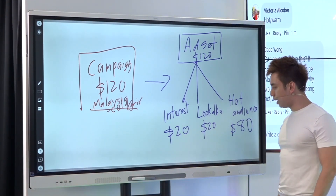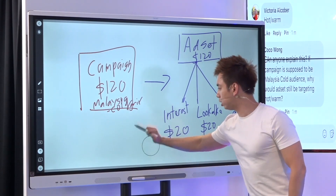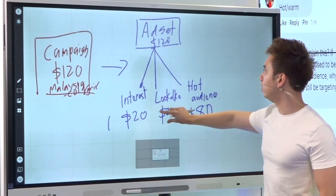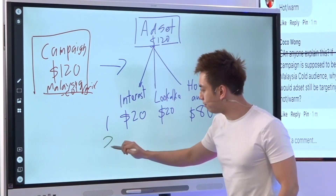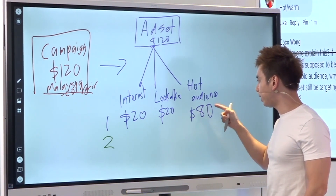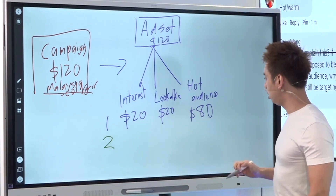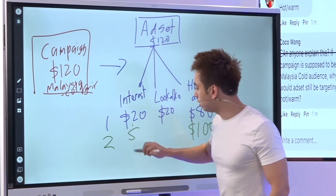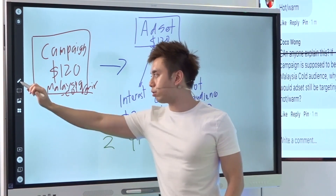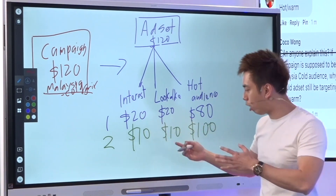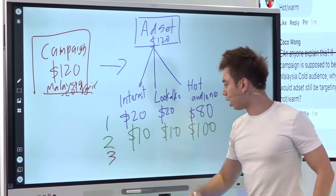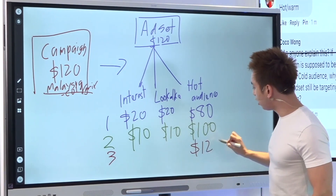On day two, Facebook is saying: we're smart, we learn through AI. Because we have numbers and statistics from day one, we now want to allocate more money and give priority to the best performer. Perhaps on day two they spend $100 on the hot audience, and $10 each on the other two — still meeting the $120. By day three, they're saying this is converting so much better than the others, so let's allocate all $120 on this audience.